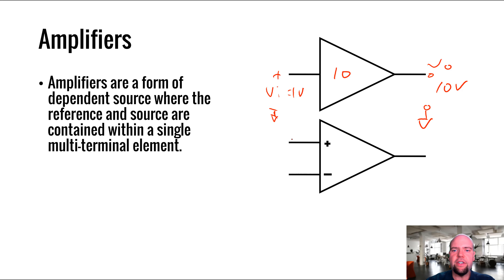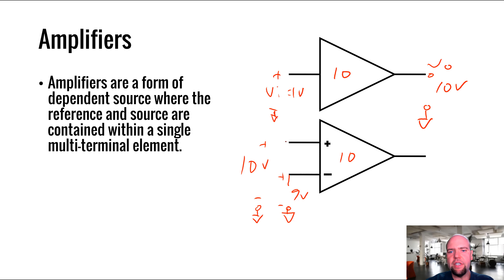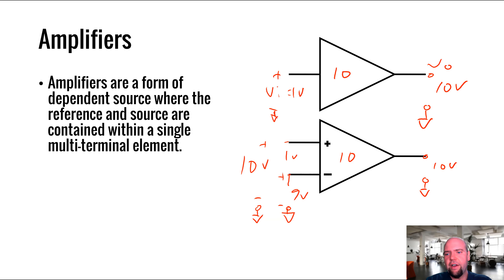There's also a differential amplifier. Rather than having a single input voltage relative to a common reference, a differential amplifier has two inputs and looks at the difference in electrical potential between those inputs. For instance, if we had 9 volts at one terminal and 10 volts at the other, with a gain of 10 amplifier, it takes the difference - 10 minus 9 equals 1 volt - and multiplies it by 10, giving an output of 10 volts. That's the difference between a single-ended and a differential input amplifier.